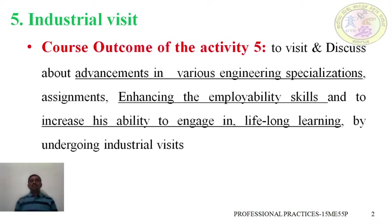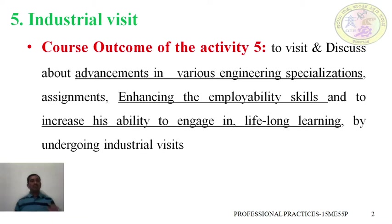What is the course outcome of the Industrial Visit Activity? The main course outcome is to visit various industries and also various advancements in the various engineering specializations. This industrial visit helps you to gain more practical knowledge, employability skills, and also increases the ability to engage in lifelong learning. The main course outcome of Activity 5 is to gain more practical knowledge with the real working environment.